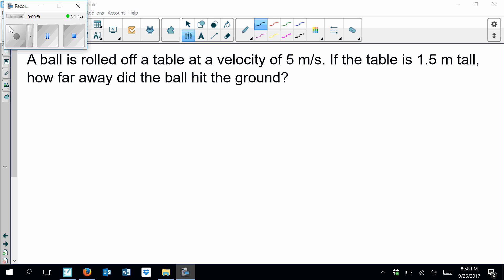So here we have a table. Let's see if I can get this to do what I want. There we go. And it is 1.5 meters off the ground. We've got this ball that rolls just horizontally at 5 meters per second. It goes through this nice projectile parabolic motion until it hits the ground. And we are worried about what this value is, that Δx.